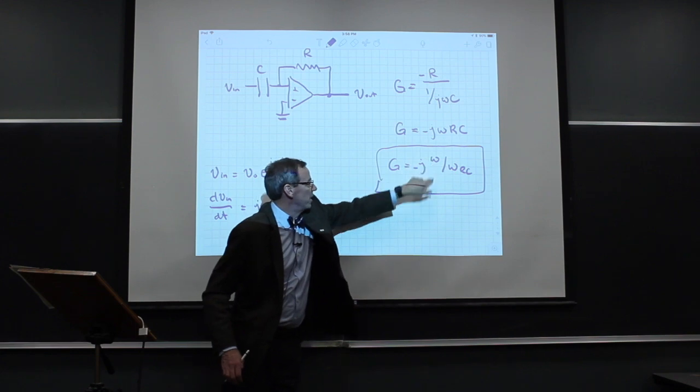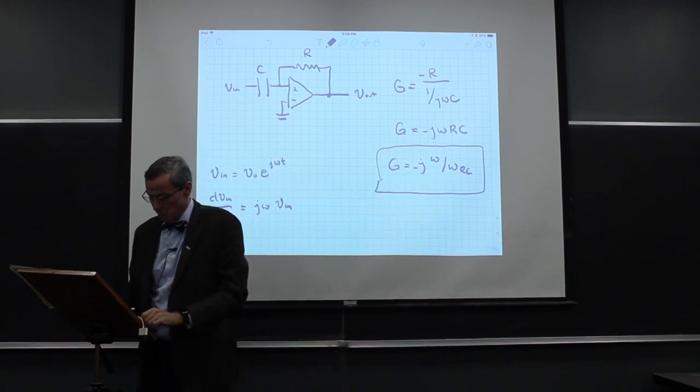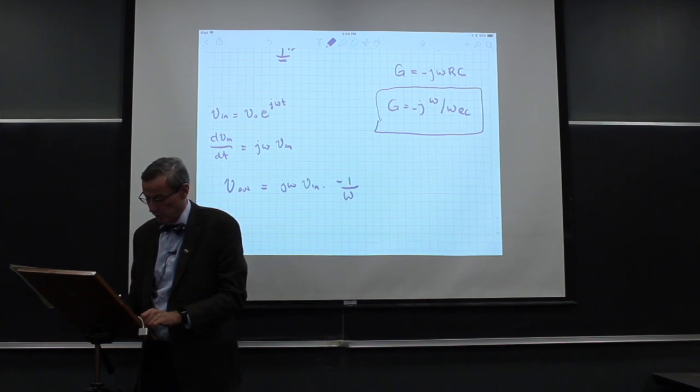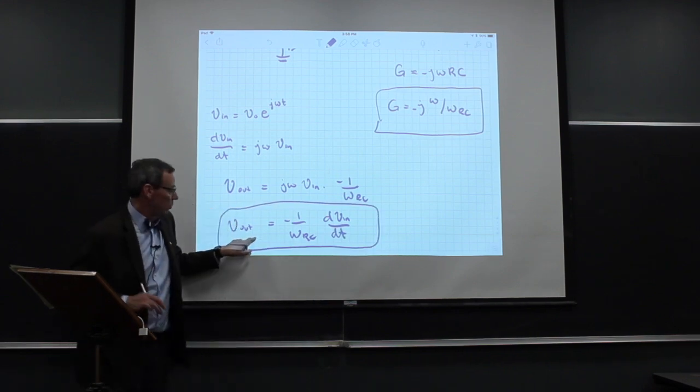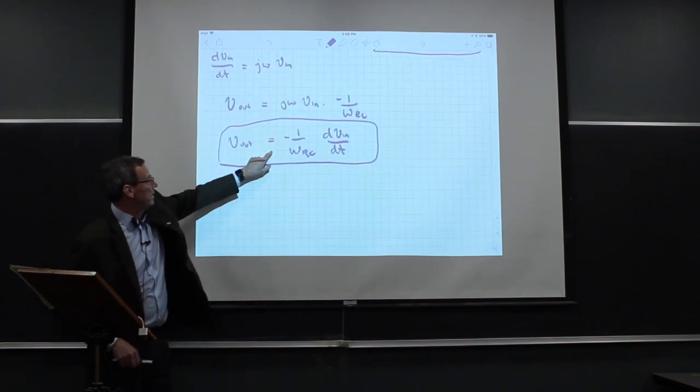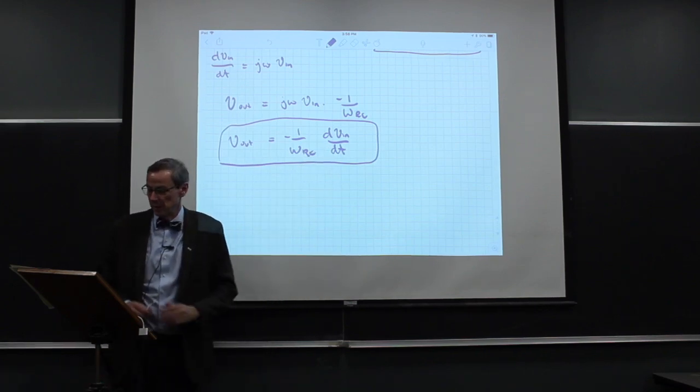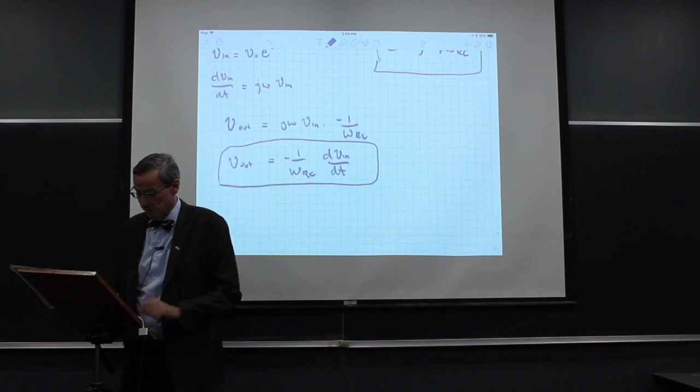And right here we see a factor of jω floating around here. So what this tells us on this circuit is that V_out is going to be jωV_IN times minus 1 over ωRC. Or V_out is minus 1 over ωRC, dV_IN/dt. We have a filter here that differentiates the input voltage. So the output is proportional to the derivative of the input voltage.